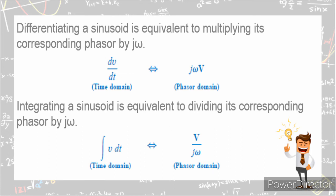Now, when integrating a sinusoid, that is equivalent to dividing its corresponding phasor by jω. So, if you have integral of v dt in the time domain, that is equivalent to V over jω in the phasor domain.